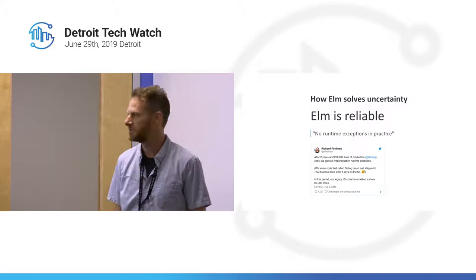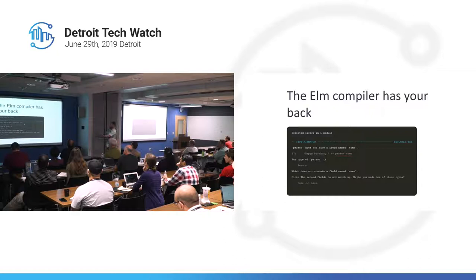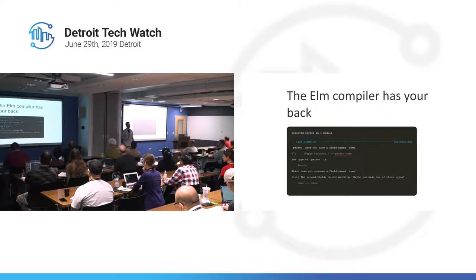How does it do that? This is an actual error message from the Elm compiler. It shows there's a type mismatch — Person does not have a field named N-A-E-M. It shows the line and underscores part of the line where there's the issue, gives us the type, and says it doesn't contain this field. The really cool part: it gives us a hint. Because we made a typo, it could find the other field that was really closely named. Elm has these world-renowned error messages and has influenced other languages.